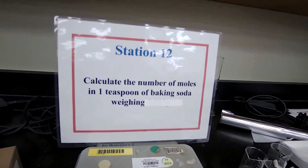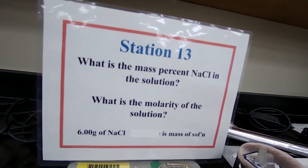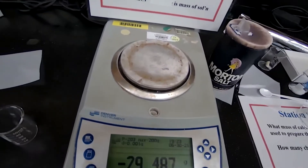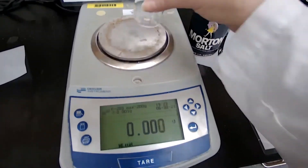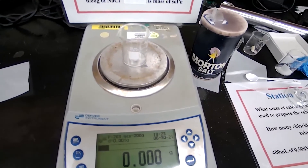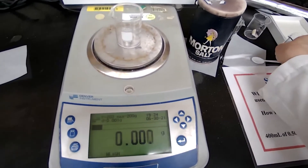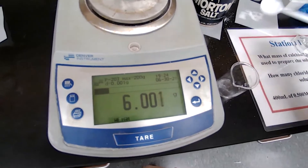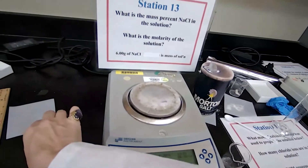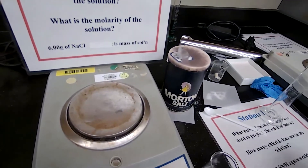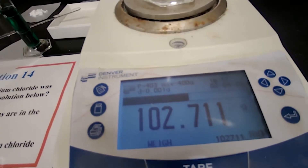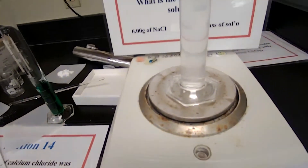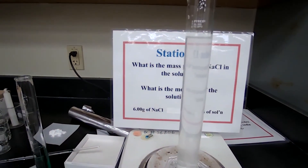For station 13, you want to calculate the percent mass of a sodium chloride solution. You need the mass of sodium chloride salt and the mass of the solution. First, measure the mass of the salt in a beaker that has been tared, adding enough to make 6 grams. Then measure the mass of the solution after mixing the salt with water and adding enough water to make 100 milliliters in the graduated cylinder. You can always pause the video to record the numbers.